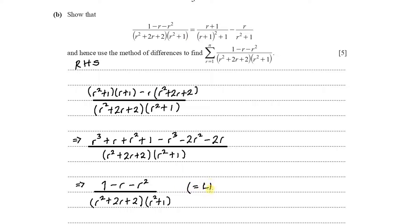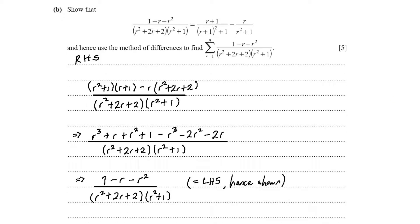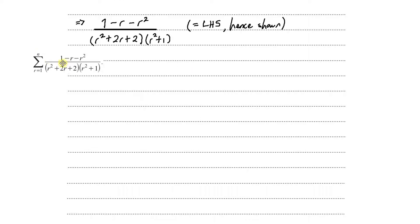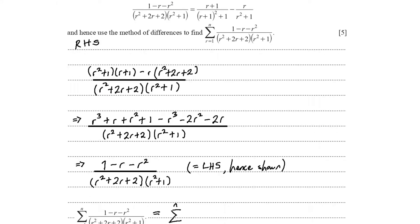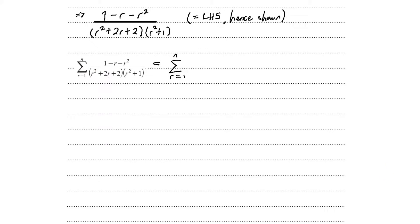This numerator — 1 minus r minus r squared — over the denominator matches the left-hand side exactly, hence shown. Moving to the next part: use the method of differences to find the summation from r equals 1 to n of (1 minus r minus r squared) over (r squared plus 2r plus 2)(r squared plus 1). We use the identity just proved, rewriting each term as (r+1) over (r+1)² plus 1, minus r over r squared plus 1.